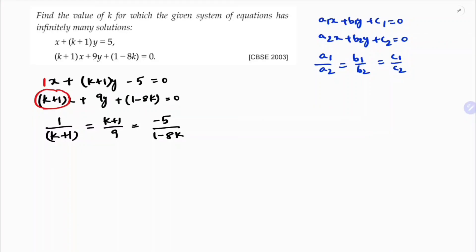So now see here, you can simplify the first two, or the next two, or the first and third also to get the value of k.